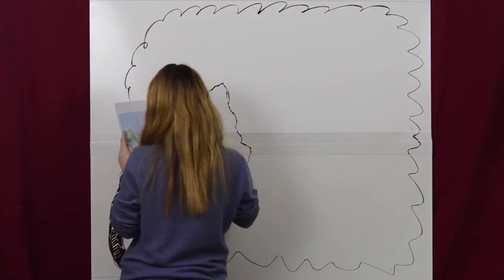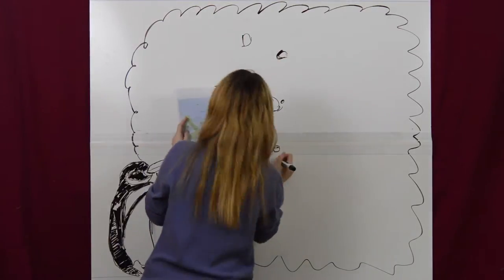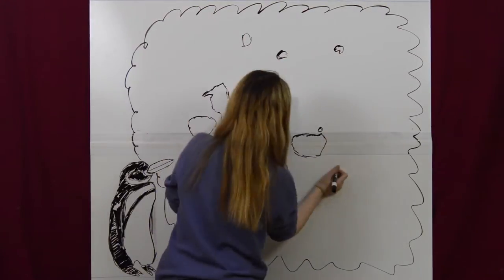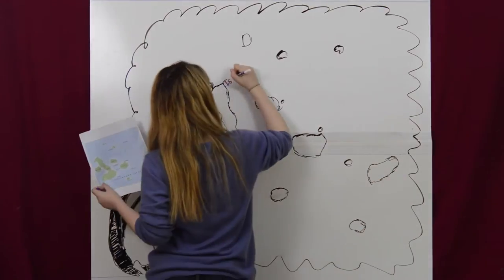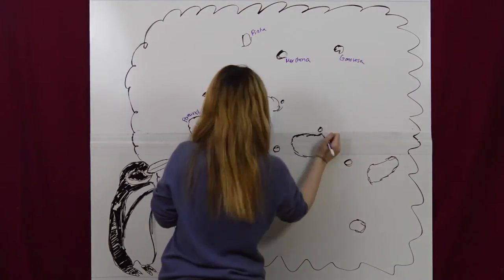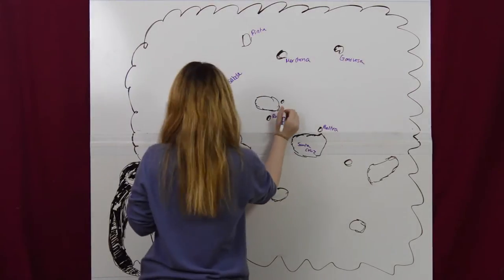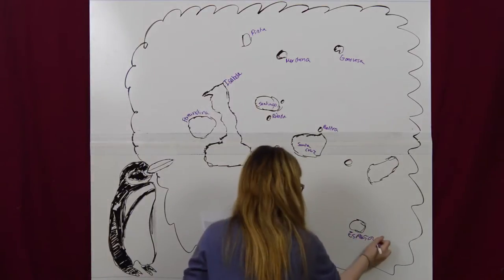Galapagos penguins are the most northerly species of penguins in the world. While 90% of the Galapagos penguins live among the western islands of Fernandina and Isabella, they also occur on Santiago, Bartolome, northern Santa Cruz, and Floriana. In fact, the northern tip of Isabella crosses the equator, meaning that the Galapagos penguins occasionally visit the northern hemisphere. They are the only penguins in the world to do so.